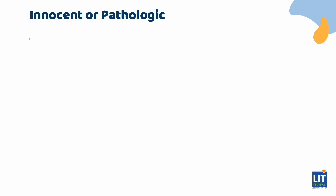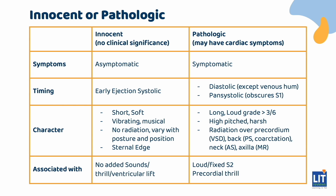The history and physical exam should focus on searching for symptoms and signs suggestive of congenital heart disease. Innocent murmurs, by definition, have no clinical significance. Thus, children with innocent murmurs are always asymptomatic. In contrast, all symptomatic murmurs are pathologic, although some pathologic murmurs may be asymptomatic.